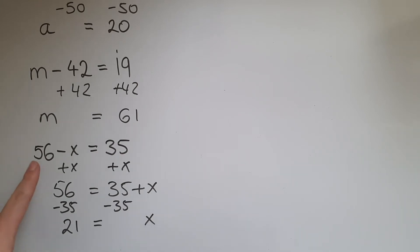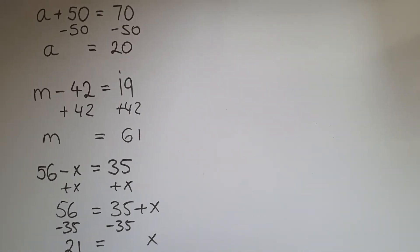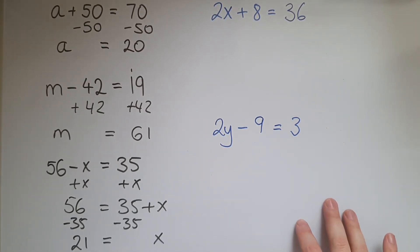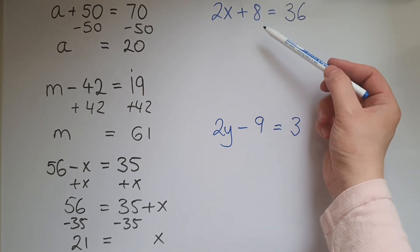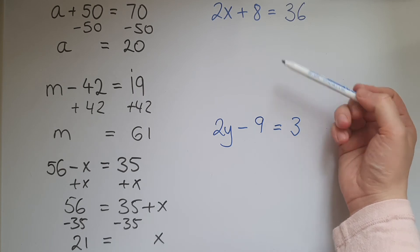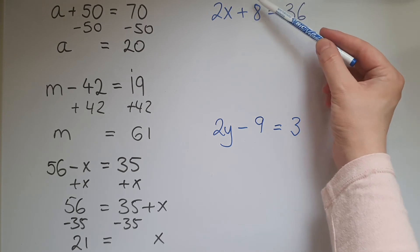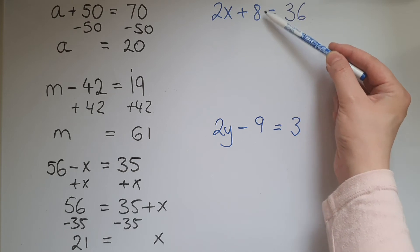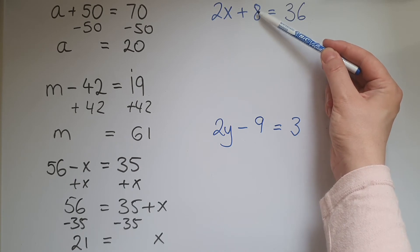So here we have another two examples with a few more steps. So we've got 2x + 8 = 36. We want to figure out the value for x. So what we're going to try and do is get rid of what we have on the same side as the x. So first thing to do is get rid of the 8.